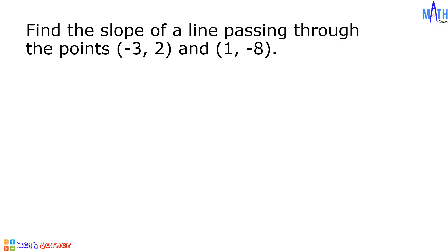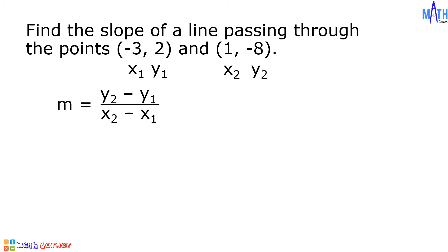Example number 2: let us find the slope of a line passing through the points (-3, 2) and (1, -8). In the given points, let us consider -3 as x sub 1 and 2 as y sub 1. 1 is x sub 2, and -8 is y sub 2. Let us substitute these given values to the formula. y sub 2 is equal to -8, minus y sub 1 is equal to 2, over x sub 2 is equal to 1, minus x sub 1 is equal to -3.